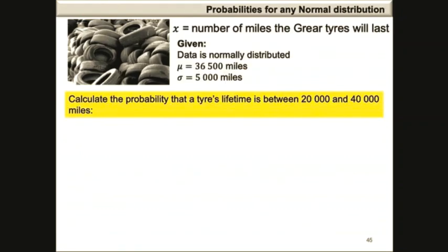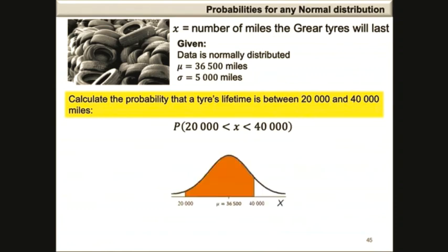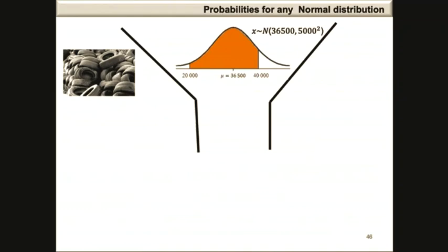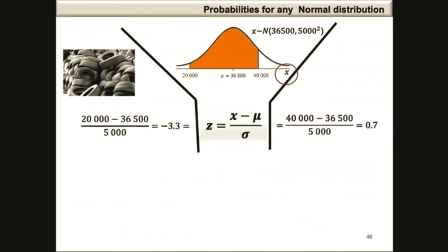Calculate the probability that a tyre's lifetime is between 20,000 and 40,000 miles. The probability statement is the probability that x is between 20,000 and 40,000. We standardize using the z-score formula: the z value to the left is 20,000 minus 36,500 divided by 5,000, giving minus 3.3, and the z value to the right is 40,000 minus 36,500 divided by 5,000, which equals 0.7.